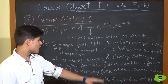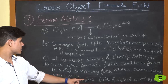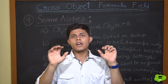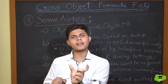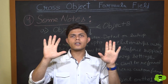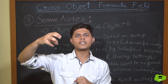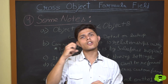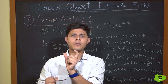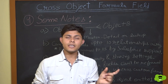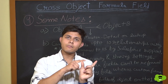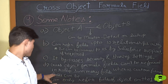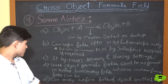Fourth, cross-object formula fields cannot be referenced in rollup summary fields, whereas custom formula fields can. When creating a rollup summary field on Object A that aggregates data from Object B's field, that field on Object B can be a custom formula field but cannot be a cross-object formula field.